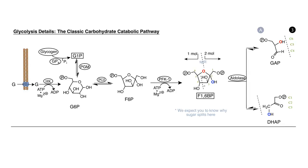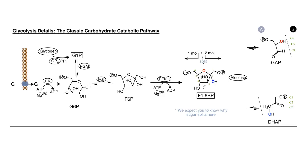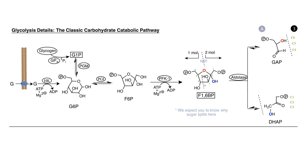GAP and DHAP are the products of the aldolase reaction. As an aside, this is also a branch point in the pathway. Dihydroxyacetone phosphate is an opportunity for the cell to make the glycerol backbones of lipids that we'll come to later. So glycolysis is indeed a resource that can be used for things other than energy generation.